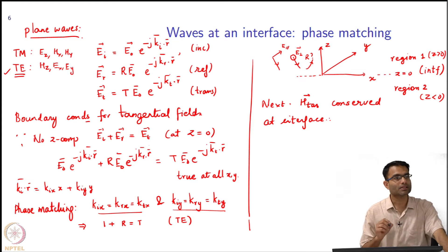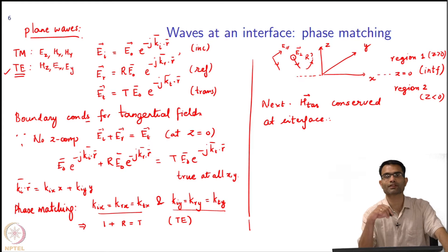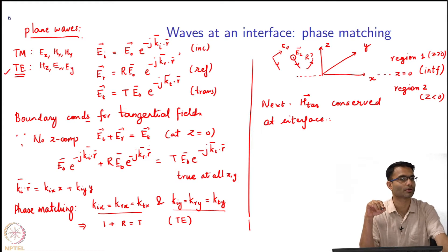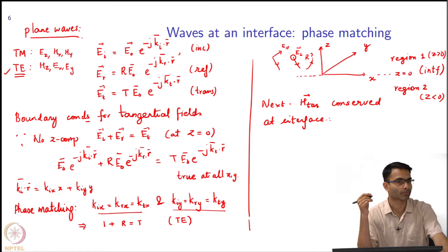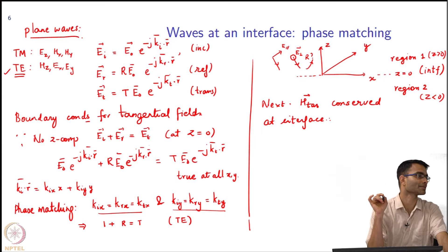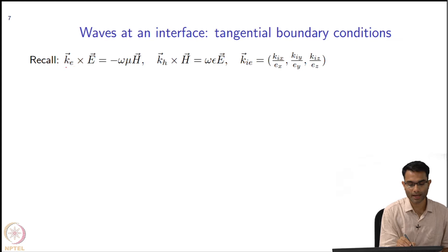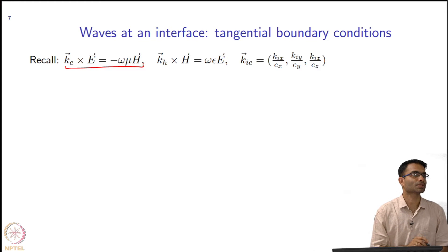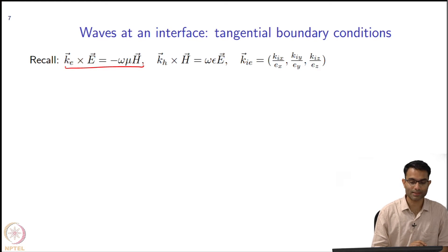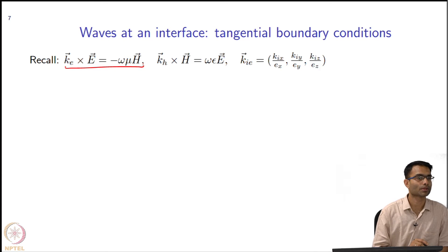Now let us look at the h_tan. Here is where the derivation differs a little bit from your high school derivation. It should, because I have redefined my Maxwell's equations with the coordinate stretching. Remember we had this equation: del cross E is equal to minus j omega mu h, and that del became replaced by del_E, and that del_E got replaced by minus j k.